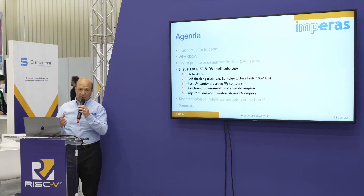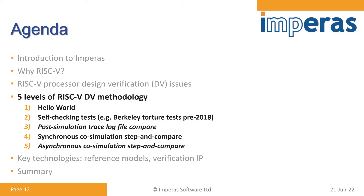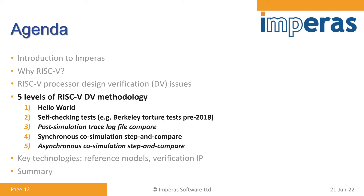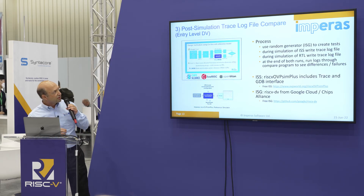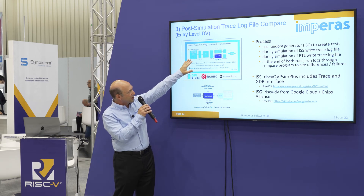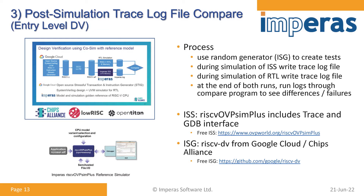There are a number of levels of DV methodology, starting with just getting a hello world up and running and some self-checking tests. Maybe the most common thing in verification is to do a post-simulation trace compare. But actually the most comprehensive is doing an asynchronous co-simulation step-and-compare. Let me talk about those two methodologies specifically. Post-simulation trace log file compare is basically running the same tests through both the RTL implementation and the reference model, then doing a comparison at the end—a pretty simple process.